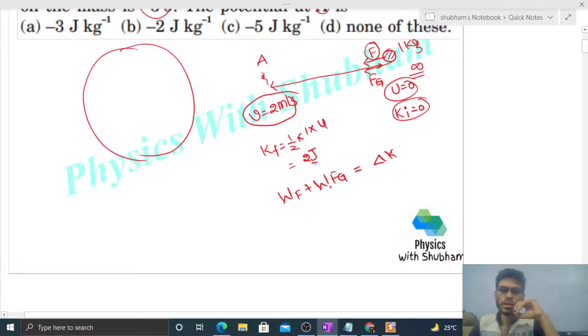Now, gravitational force of attraction is a conservative force, so we can write work done by the conservative force equals minus of change in potential energy. So work done by the gravitational force of attraction will be minus of change in gravitational potential energy of the body, which equals delta K.